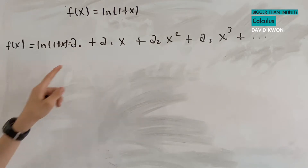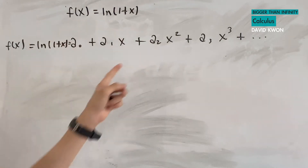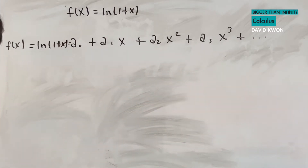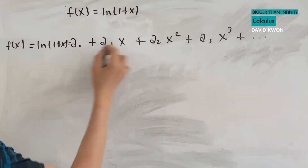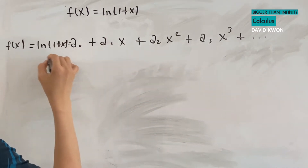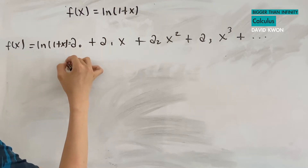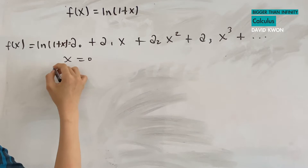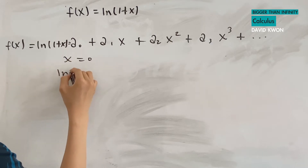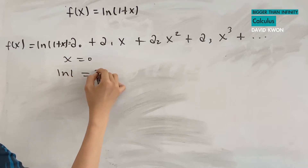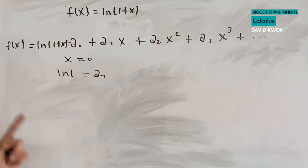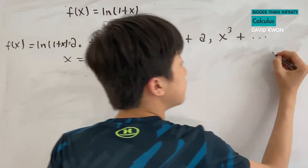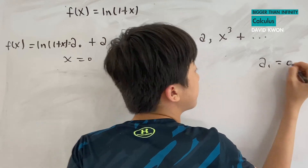To solve this, we need to find a₀, a₁, a₂, and a₃. We will be solving that right now. I will set x equal to zero, so when zero is substituted in, we get ln(1) equal to a₀. And since ln(1) is zero, we know that a₀ is zero.